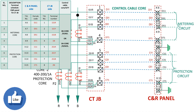Labelling of each core is done at both ends of the wire according to the control and relay panel side's terminal numbering or marking. Control cable connections of all other components are to be done similarly.